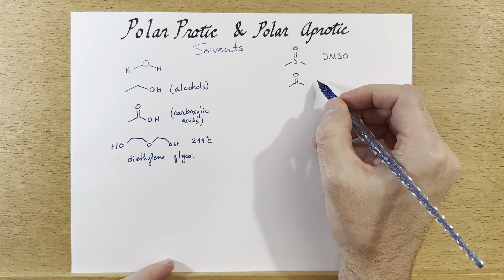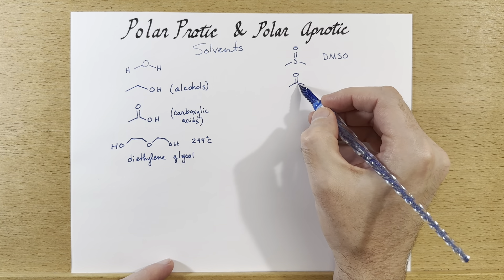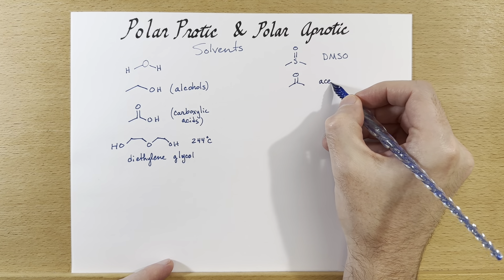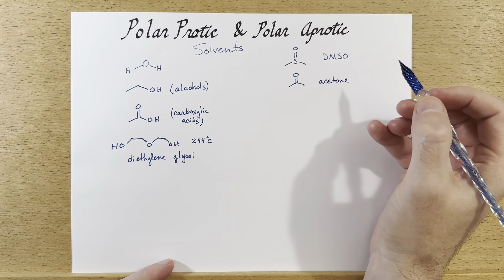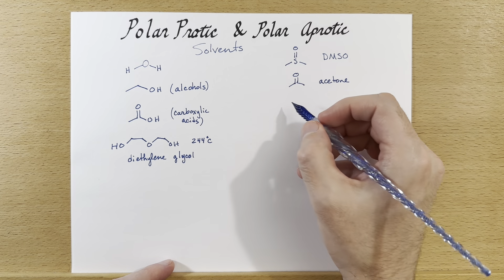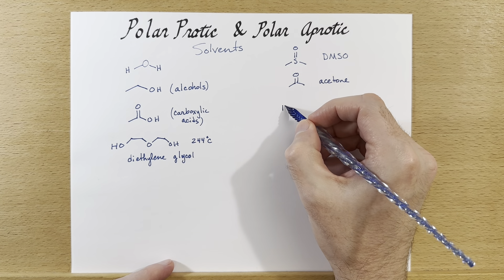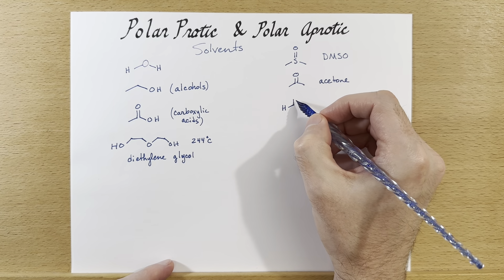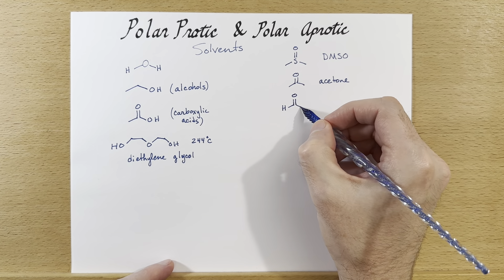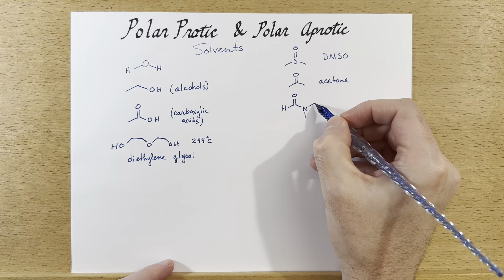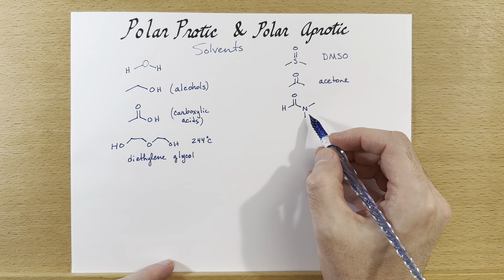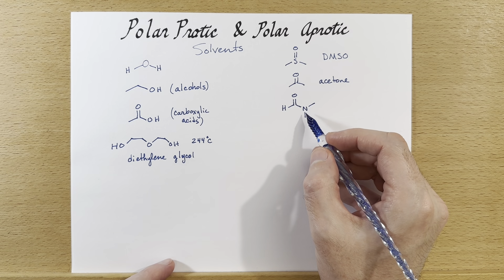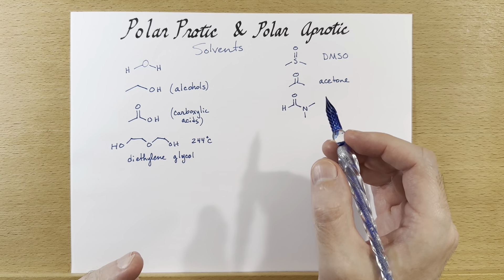Another polar aprotic solvent that looks similar — except with carbon instead of sulfur — is acetone. And then another great solvent is dimethylformamide, or DMF. There are no protons that can come off; it is slightly basic and quite polar.